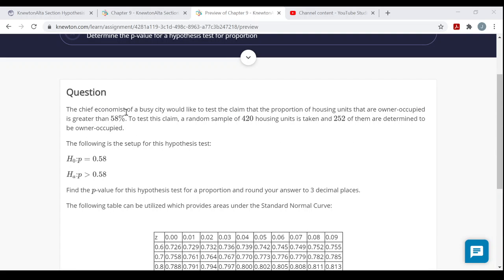So here the chief economist of a busy city would like to test the claim that the proportion of housing units that are owner-occupied is greater than 58%, and you see how that's the alternative hypothesis here, p is greater than 0.58. Then the null hypothesis would be that p is less than or equal to 0.58, but you're only assuming the equality part. So the null hypothesis is that this proportion of housing units that are owner-occupied is equal to 58%. That's the null hypothesis, what's being assumed.